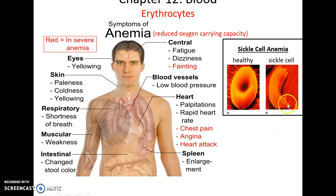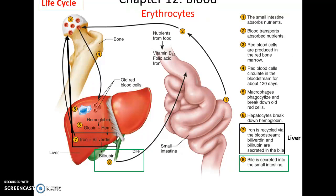One cause is sickle cell anemia, a genetic disorder in which the red blood cells are sickle-shaped with jagged points and tend to rupture into blood vessels. The normal life cycle of erythrocytes starts in the red bone marrow, then they roam in the bloodstream for about 120 days, after which aged red blood cells are recycled in the liver and spleen. The liver breaks down hemoglobin into globin and heme; iron is recycled back to the red bone marrow, while heme is converted to biliverdin, then bilirubin, which is found in bile and released into the small intestine to aid digestion.